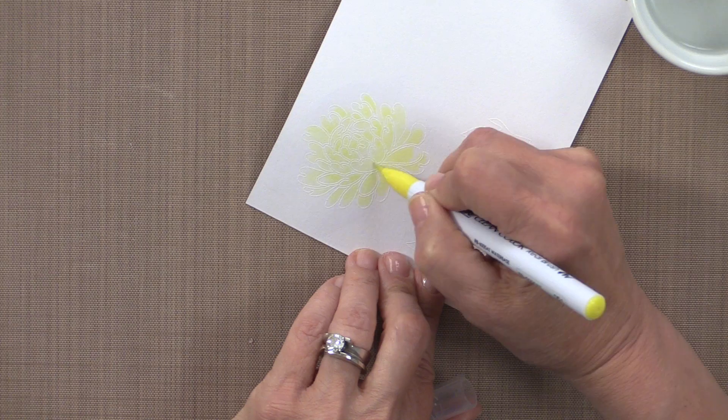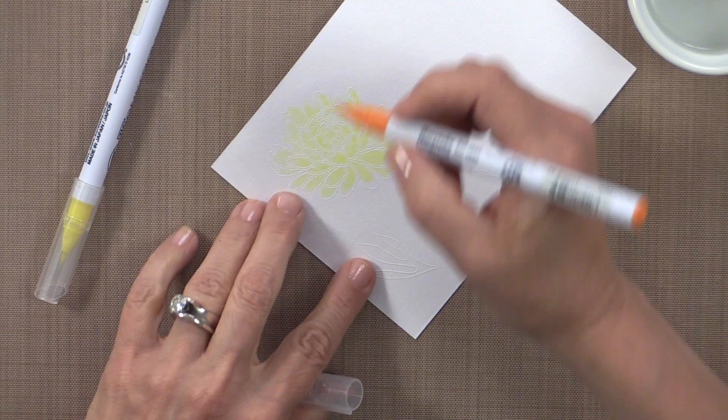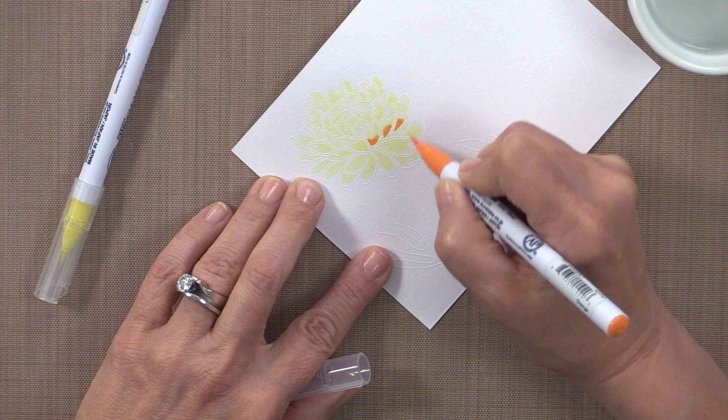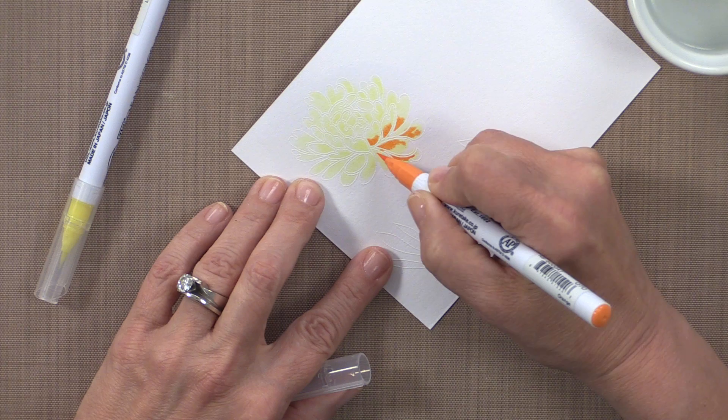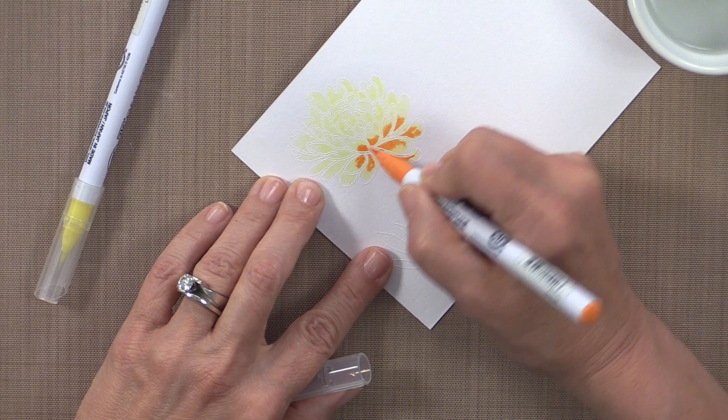And now I'm going to grab the orange marker. And here I'm going to do this very similar to the way that I do a lot of my Gamsol coloring. I'm just adding a little bit of the orange paint right along the bottom of each petal where it would appear to be coming out of the flower. So just little bits of color laying down.